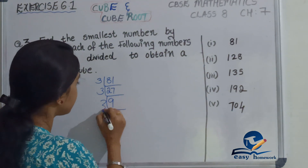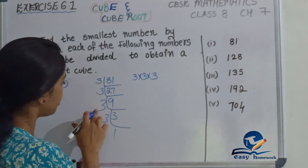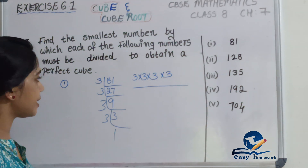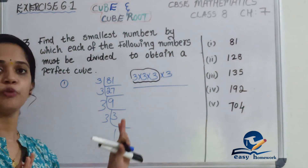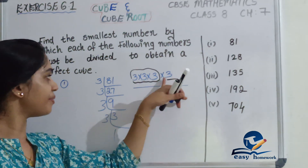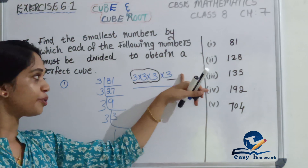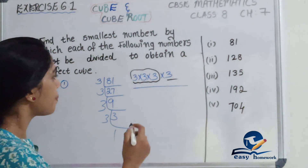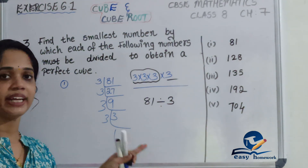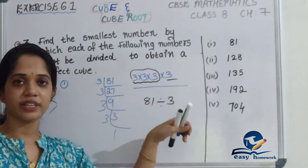81 divided gives us: 27, then 9, 3, 3, 1. So the prime factorization is 3 × 3 × 3 × 3. We take triplets: one triplet of three 3s, and we have one extra 3 remaining. So we need to divide by that extra 3.